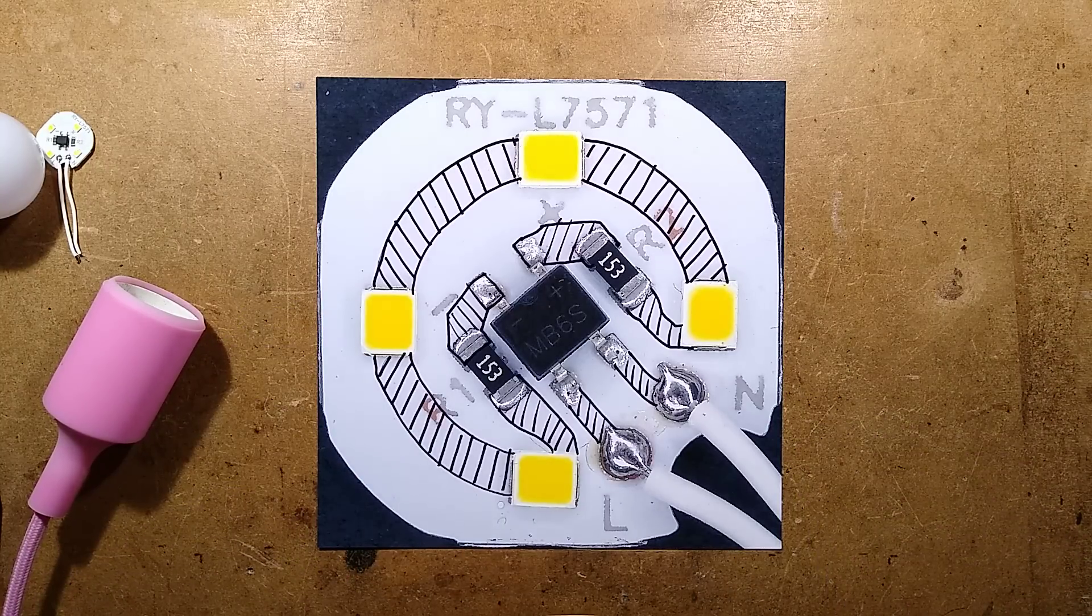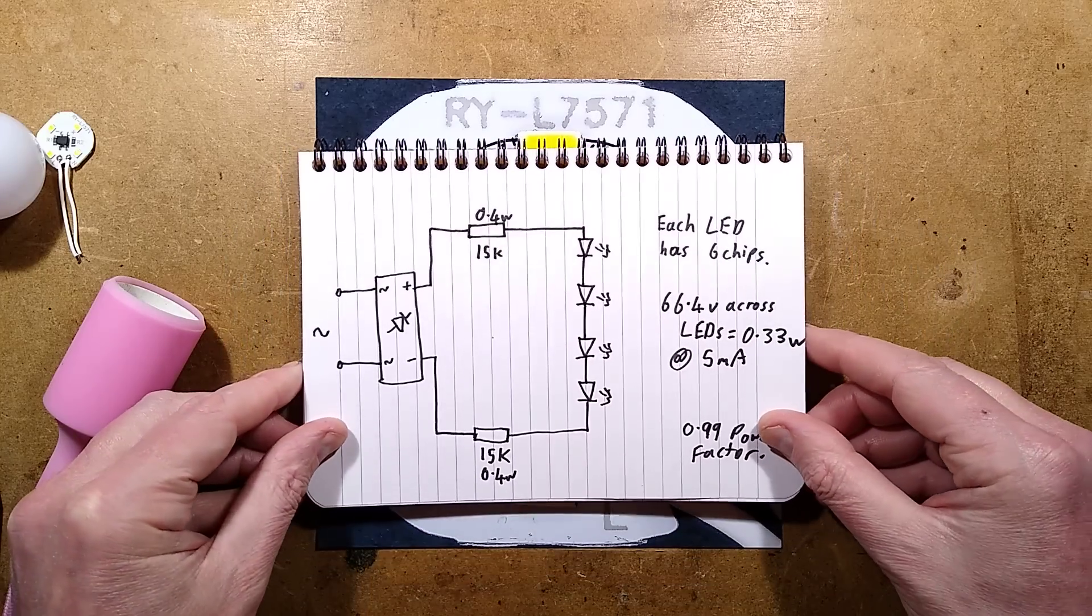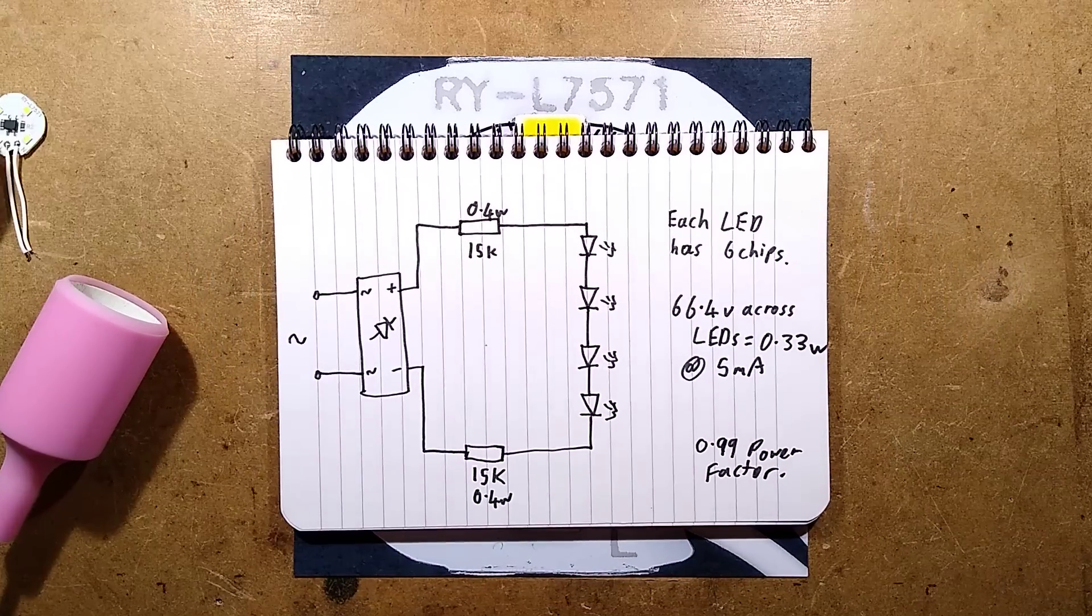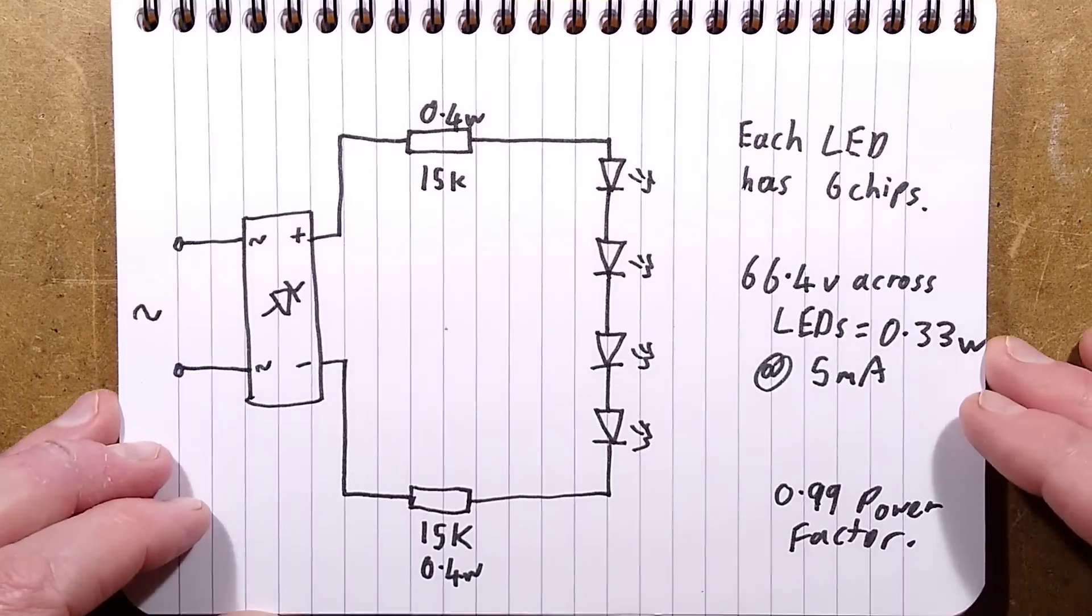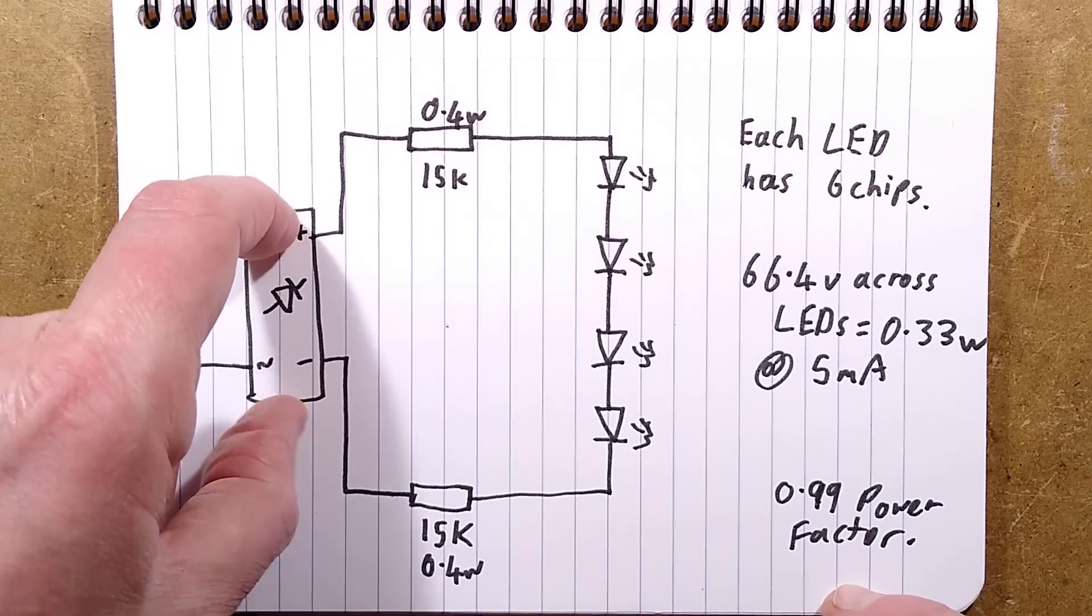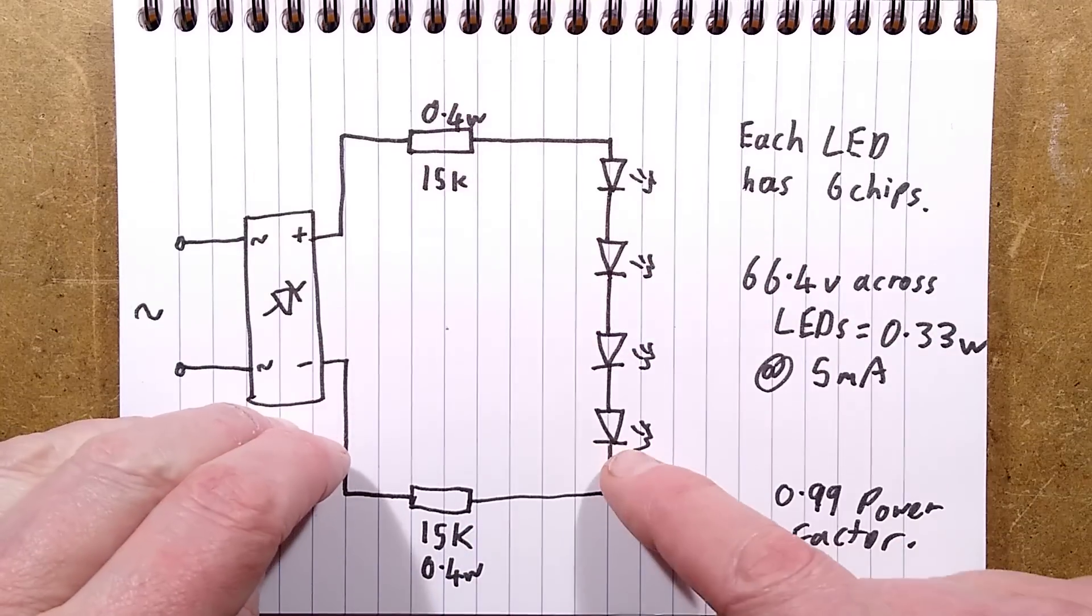So if I show you the schematic for this, and I'll zoom down this a little bit, there's the incoming supply, there's the bridge rectifier, there's the two resistors, and there's the LEDs.